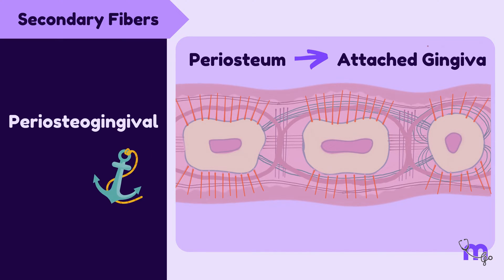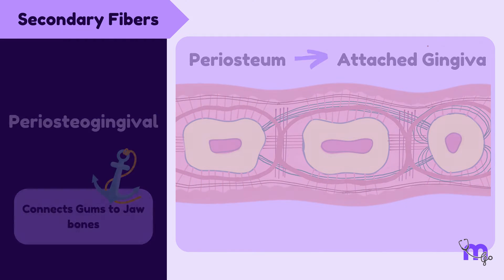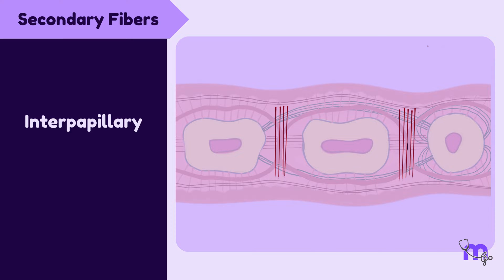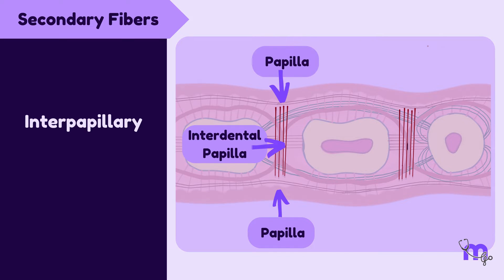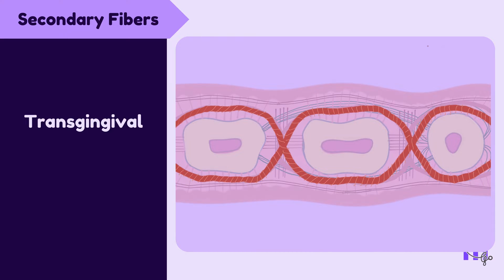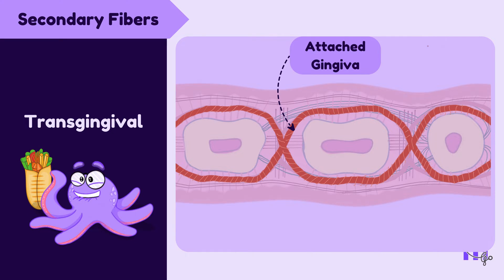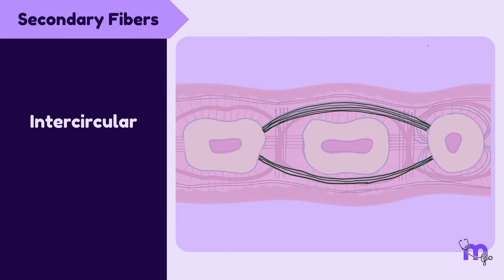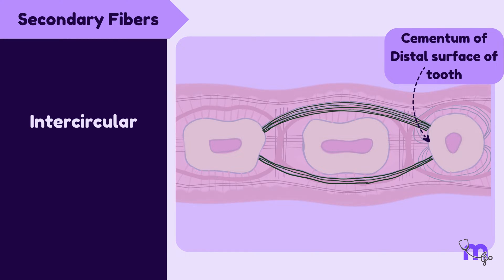These fibres act like anchors, connecting the gums to the jawbone. Next, we have the interpapillary fibres, present within the interdental papilla, connecting one papilla to the other — like bridges between the spaces of our teeth, giving support to the gums in between. Then, the transgingival fibres, present within the attached gingiva, wrap around our teeth like a protective net, keeping them in place. Moving on, intercircular fibres start from the cementum of the distal surface of one tooth, split buccally and lingually along the adjacent tooth, and get inserted into the cementum of the other — like loops that start from one tooth, go around another, and come back.